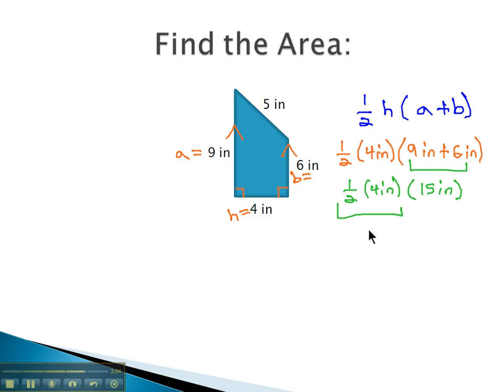Multiplying from left to right, half of 4 is 2 inches times the 15 inches. Finally, multiplying 2 times 15, we get 30 square inches.